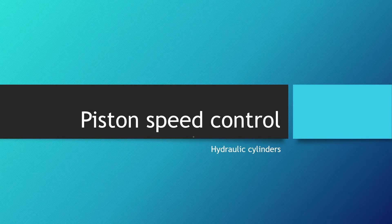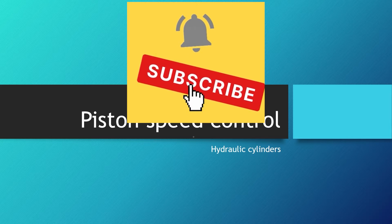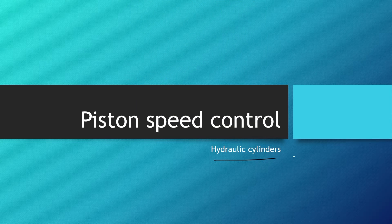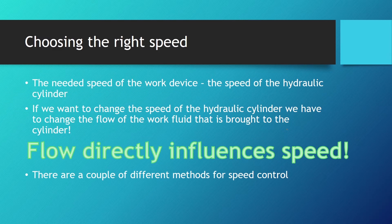Welcome to lesson 38 in Hydraulics 102 and lesson 7 in the section on hydraulic cylinders. In this lesson we will be talking about piston speed control. The selection of the speed of the piston or piston rod is done according to the needed speed of the work device. If a change of speed is needed during operation, flow has to be changed as we talked about in the previous lesson.